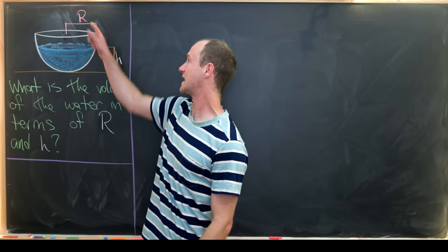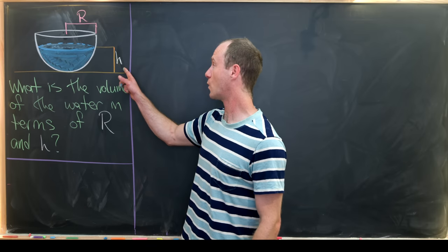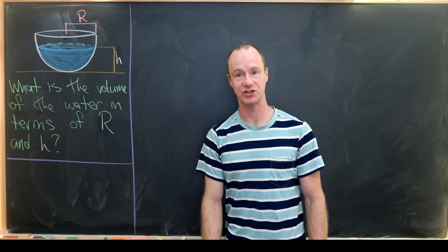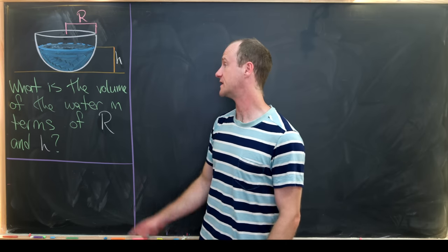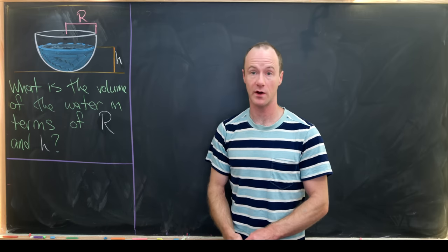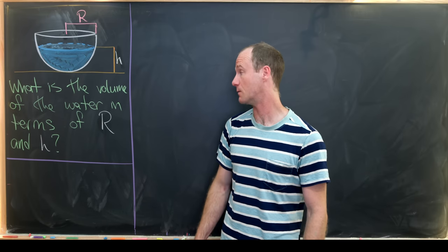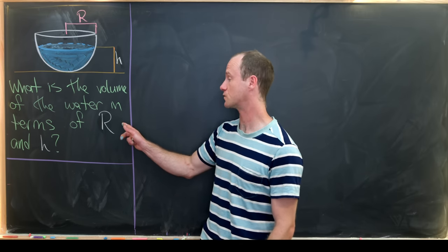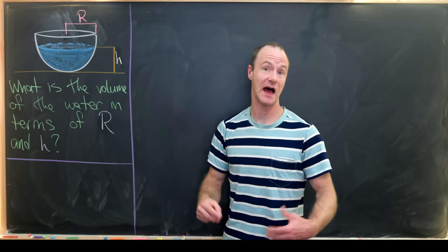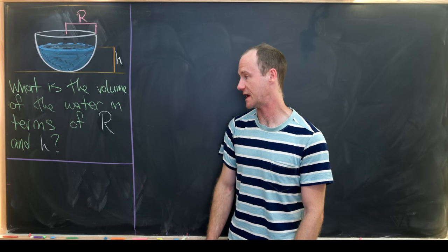This bowl has radius R and it's filled with water to a height of h. And our goal is to determine the volume of the water in this hemispheric bowl in terms of this radius capital R and the height or the depth of the water h.